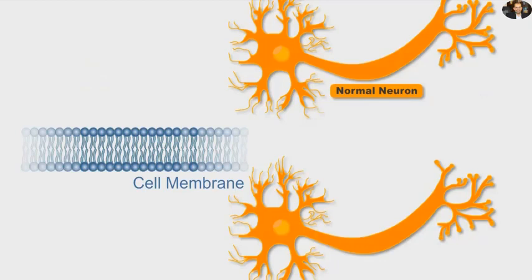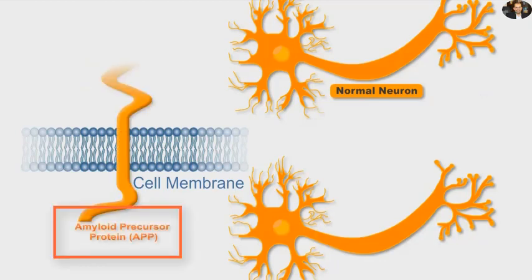In the healthy brain, there is a natural protein that crosses the nerve cell membranes. It is called amyloid precursor protein or APP.